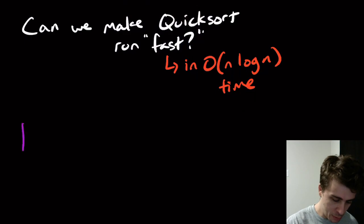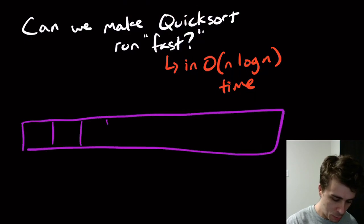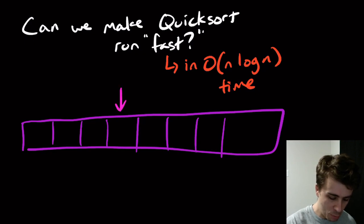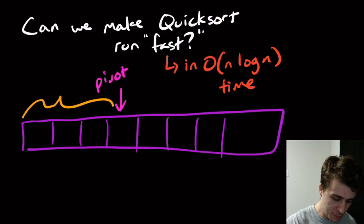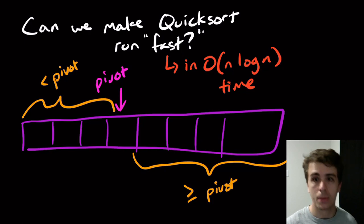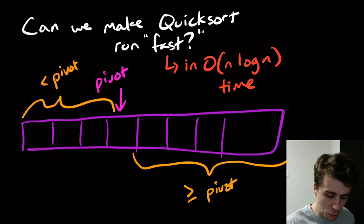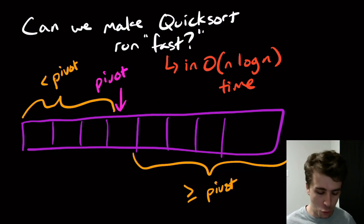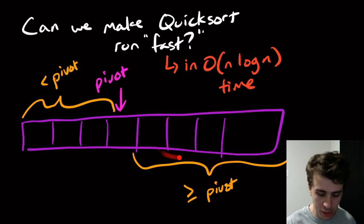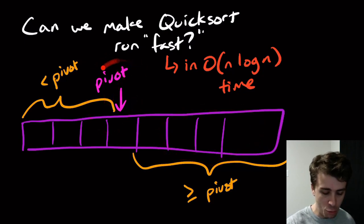Remember what QuickSort does: if we have an array with some contents and we want to sort it, we pick a pivot — some element in the array — and all elements to the left are less than the pivot, and everything to the right is at least as large. We then recursively work on the two pieces to sort the array.